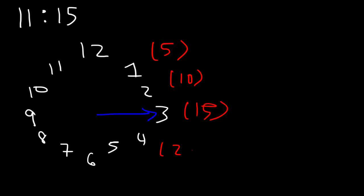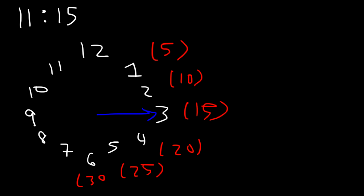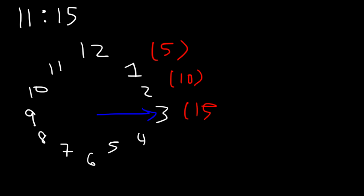35 is for 7, and so forth. 55 is for 11. This is 50, 45, 40, and then back to 0. So just in case you were wondering, those are the numbers that you need to know.